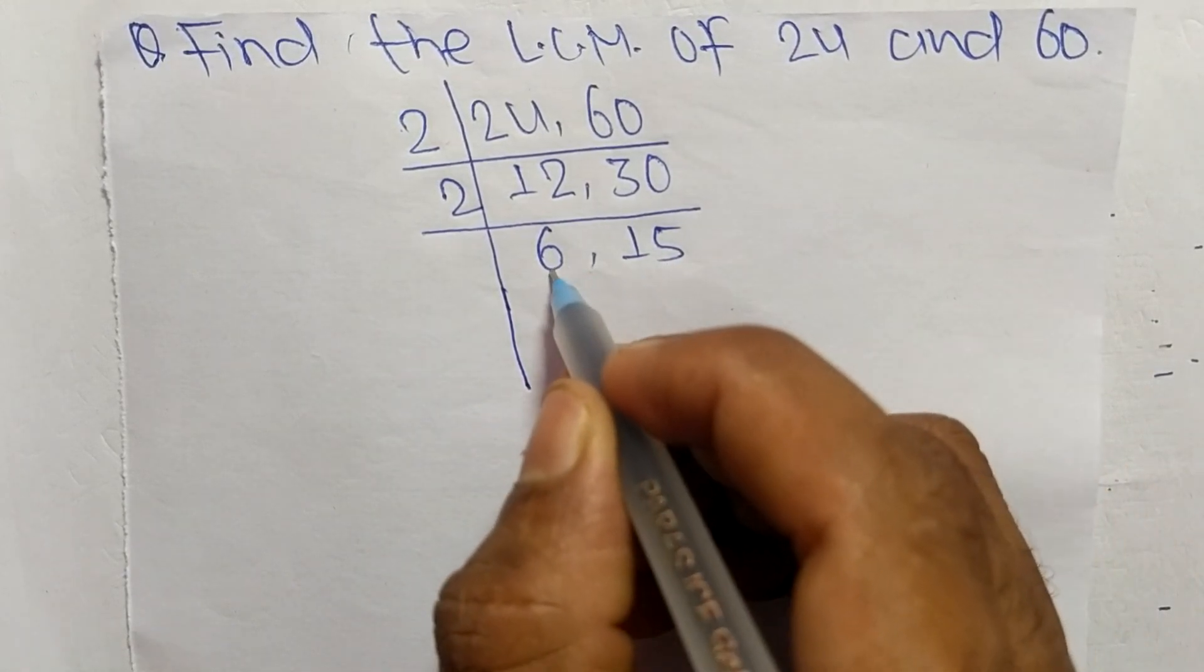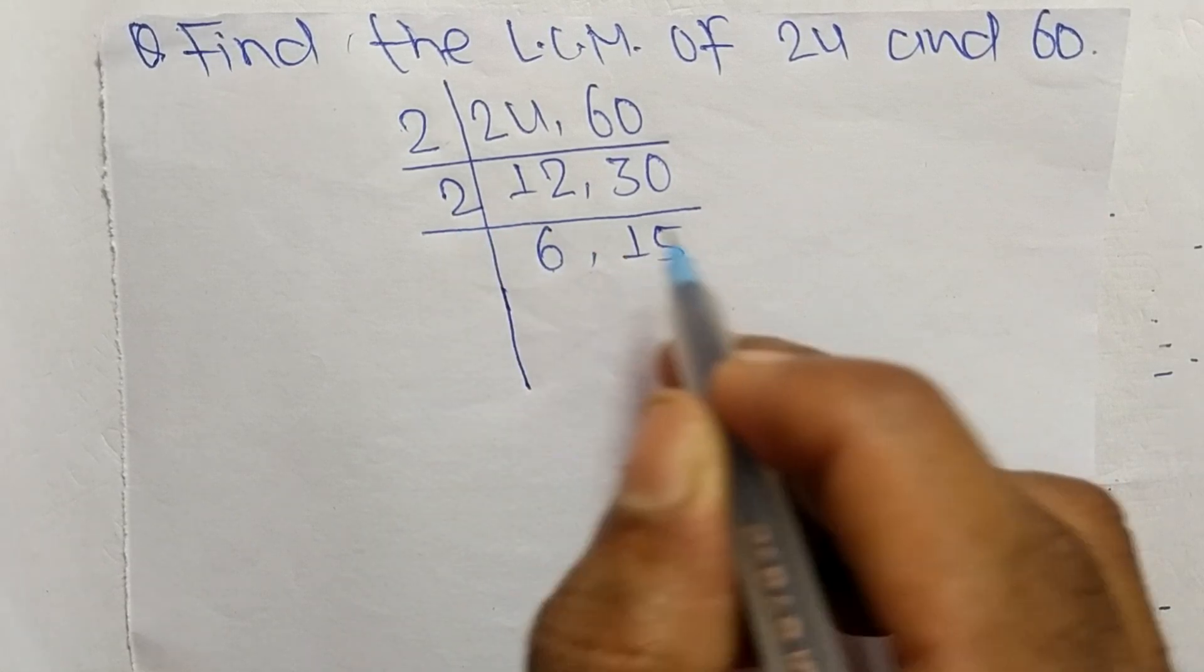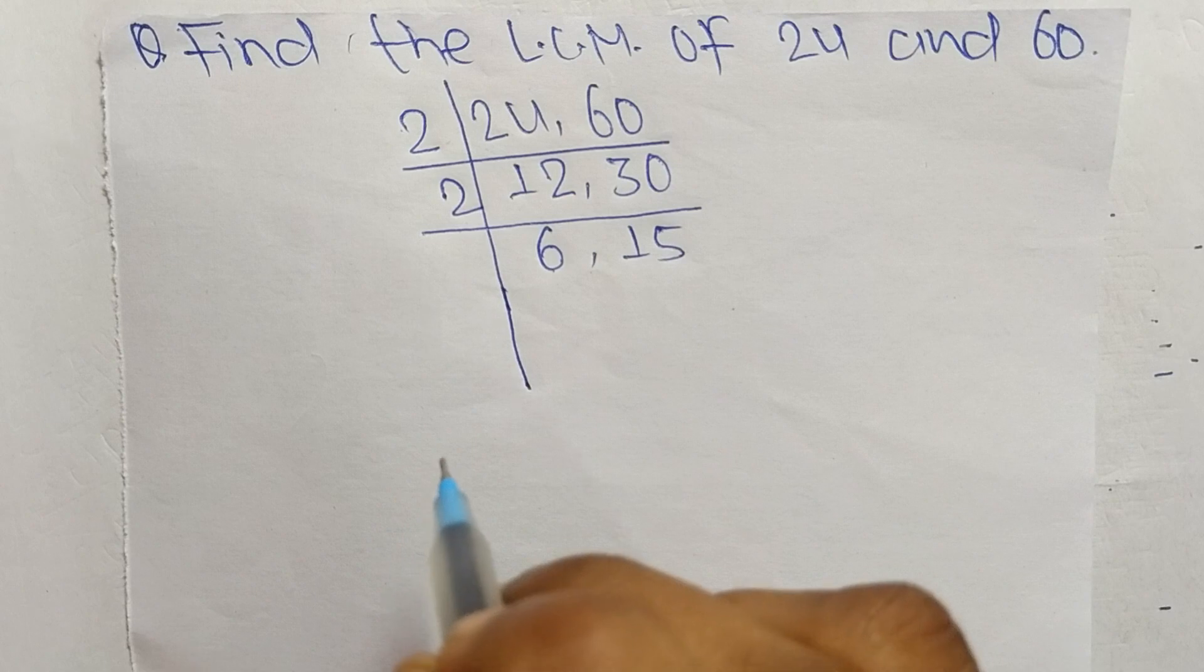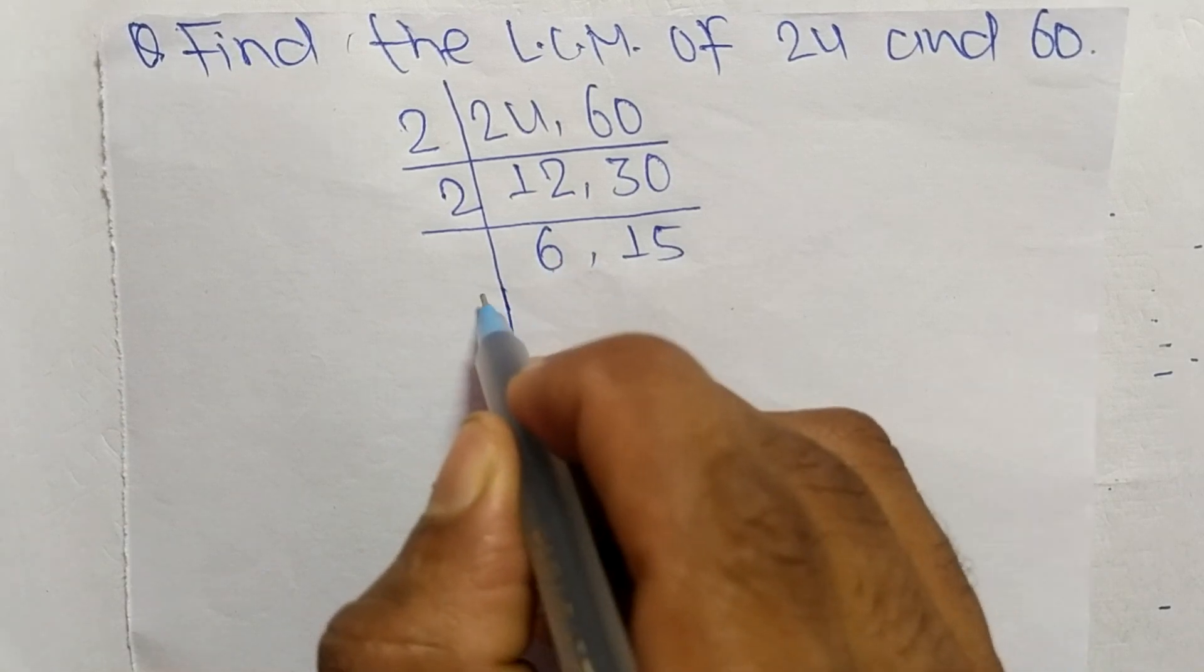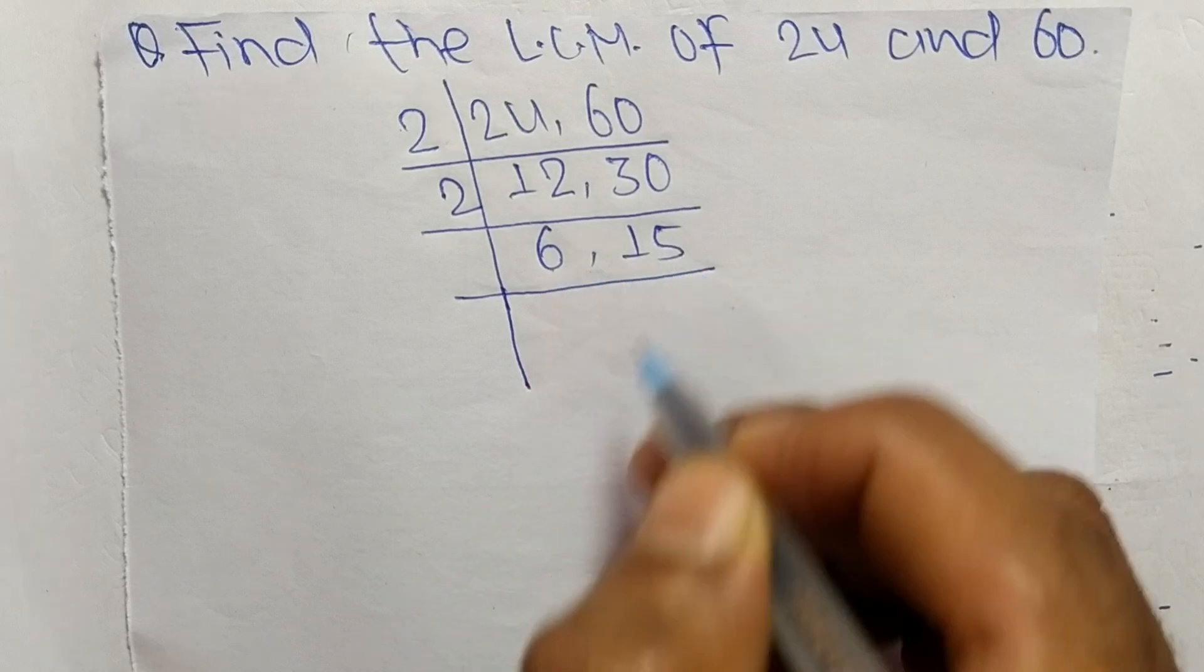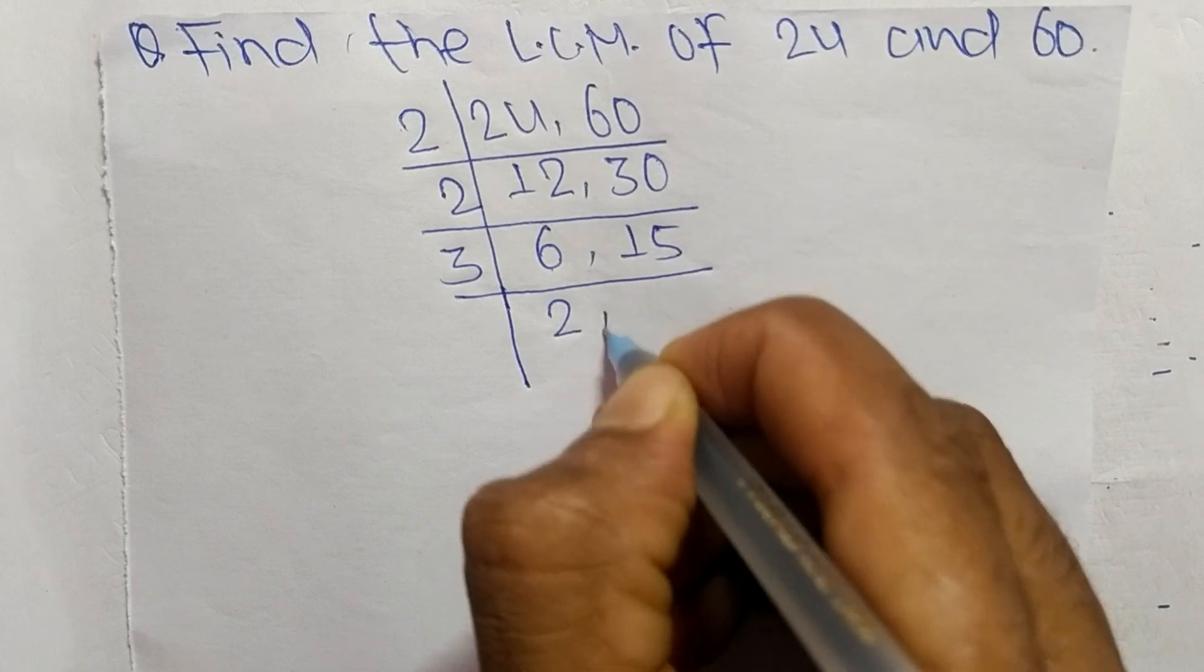Among them 6 is divisible by 2 but 15 is not exactly divisible by 2. So now we choose the number greater than 2 which can divide 6 and 15, so the number is 3. So 3 times 2 means 6 and 3 times 5 means 15.